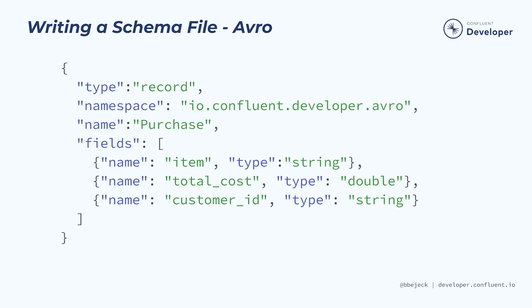In the meantime, here's an Avro representation of that same purchase record. Notice that it's defined in JSON format. The namespace field serves the same purpose as in the protobuf file, preventing name collisions. The namespace also becomes the package name for the generated Java file. For Avro, fields are declared in a JSON array. Again, we define this purchase record using the same fields as in the protobuf file.